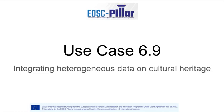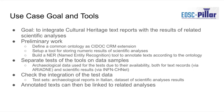This short video shows the results of use case 6.9: integrating heterogeneous data on cultural heritage. The use case goal is to integrate cultural heritage text reports with the results of related scientific analysis.